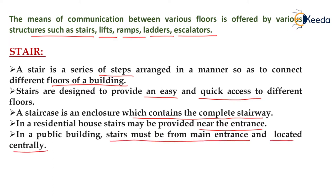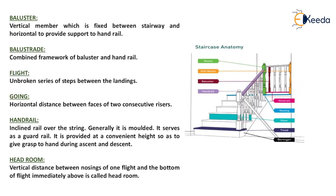Now we will study different parts of stairs. First is the baluster — a vertical member which is fixed between the stairway and horizontal member to provide support to the handrail. Next is balustrade — the combined framework of balusters and handrail is called balustrade. Third is flight — an unbroken series of steps between landings is called a flight.